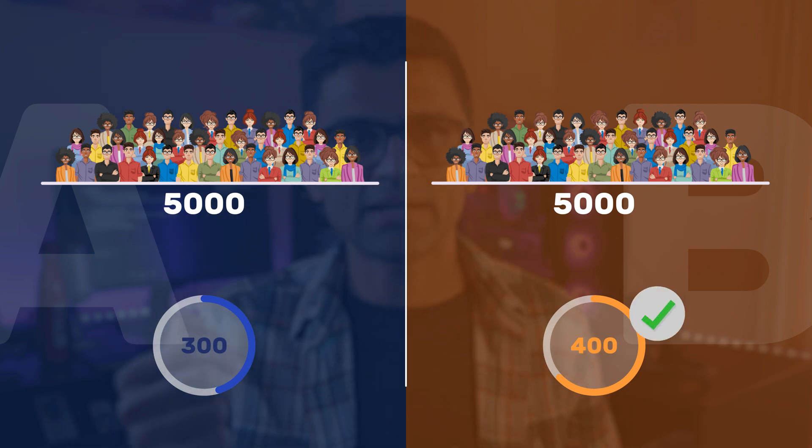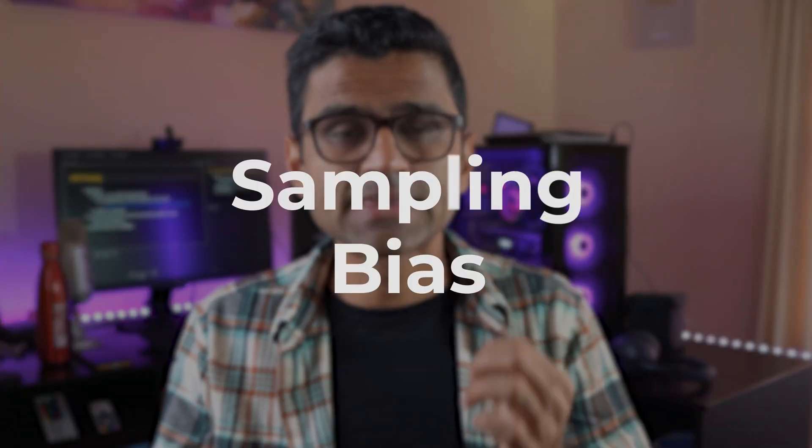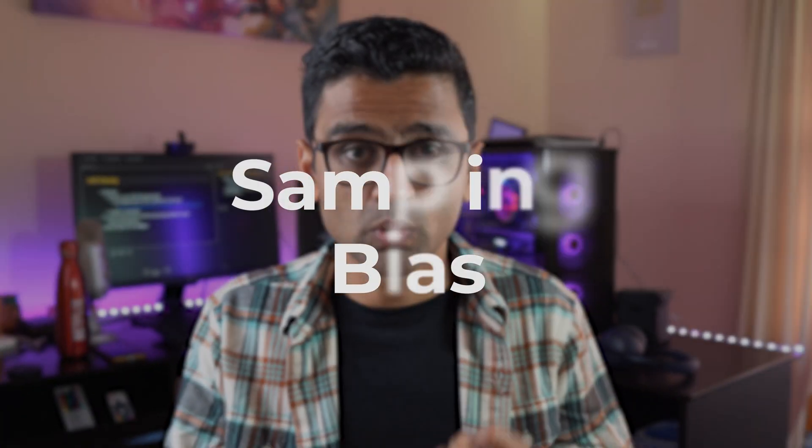At the end of 10 days, version A got 300 sales leads and version B got 400 sales leads. They can now conclude that version B is better because it generated more sales leads. However, it's not as simple as it looks, because there are a number of factors you need to consider.